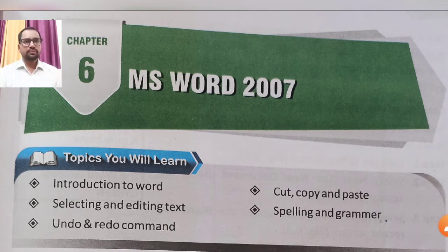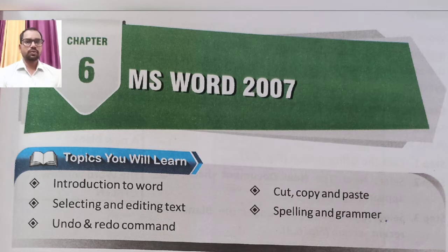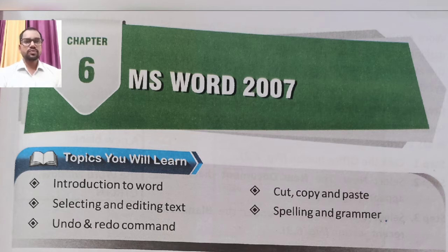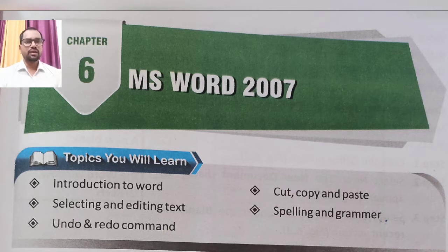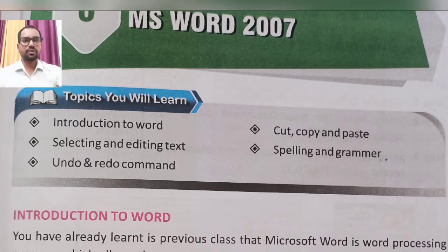Hello students, I hope you are all well. Today we will discuss Chapter 6: MS Word 2007. In this chapter, we will discuss how MS Word 2007 is used and how we perform different tasks with it — including basic introduction, selecting and editing text, using commands, copy-paste, cut, removing grammatical errors, and how to add words to the dictionary.